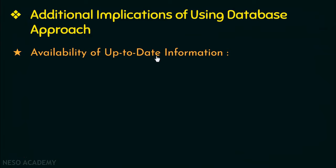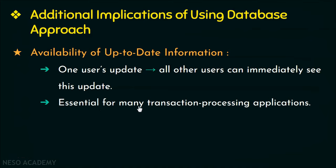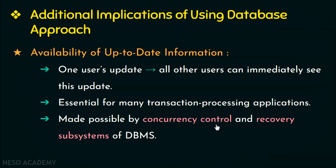The next implication is availability of up-to-date information. Since DBMS allows multiple users to share a database, when one user updates data, all other users can immediately see the update. This is essential for many transaction processing applications and is made possible by the concurrency control and recovery subsystems. Concurrency control manages simultaneous access, preventing two users from editing the same record at the same time.